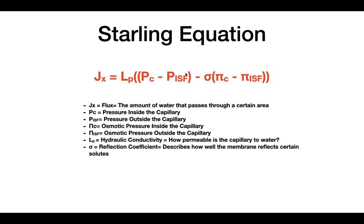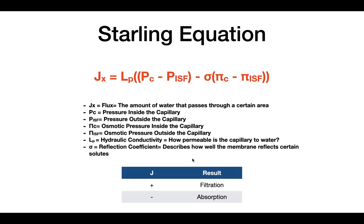The difference between Pc and Pisf is the hydrostatic pressure. Sigma is known as the reflection coefficient, and we're going to talk about that in a little bit. These two remaining values are the osmotic pressures — the osmotic pressure inside the capillary and the osmotic pressure outside the capillary. When you bring in the measured values for each of these variables, you can calculate which direction water is going to flow.